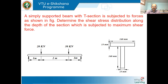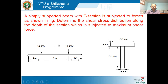The next problem differs from previous ones. Unlike the standard cases — simply supported beam with central point load or UDL — here we have a simply supported beam with two point loads and a T-section. We need to draw the shear force and bending moment diagram to find the maximum shear force, then plot the shear stress distribution along the depth.